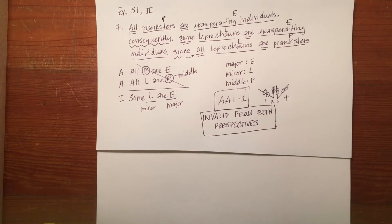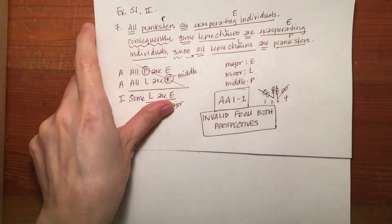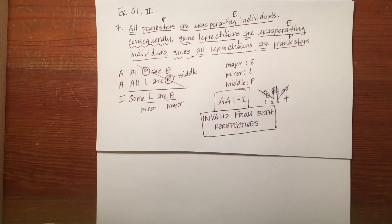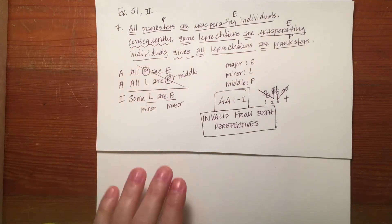Here's another video about Venn diagrams with an example from the Aristotelian perspective. We looked at this example in exercise 5.1, Roman numeral 2, about pranksters and leprechauns. By determining the mood and figure of the argument, we determined using the chart that it was invalid from both perspectives. But what would happen if we were to take this same argument and use a Venn diagram?